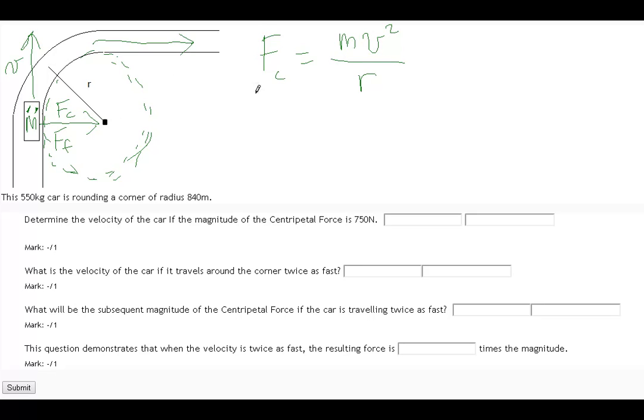So this is the force that the car would experience as it turned the corner. The velocity is going to be solving for this v right there, and it will be meters per second. Now, the force is 750, the radius is right there, 840, and then of course the mass is 550.